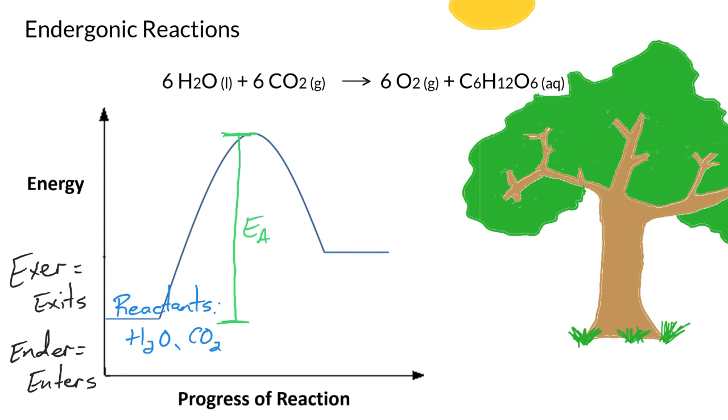After we've added enough energy for the reaction to occur, it's going to proceed forward and we're going to get our products, which in this case are glucose, the sugar that plants produce and that we eat, and oxygen gas, which we breathe. Photosynthesis is pretty useful to us animals.